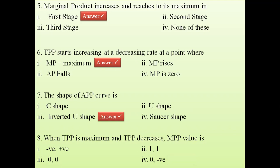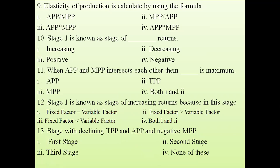The eighth question: When TPP is maximum and TPP decreases — what will be the respective MPP value? When TPP is maximum, MPP is zero. When TPP decreases, MPP is negative. So the answer is: when TPP is maximum, MPP is zero; and when TPP decreases, MPP is negative.